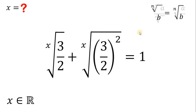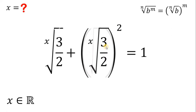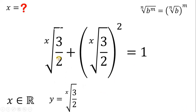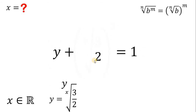Let's recall another identity: if we have the n root of b raised to m, it is equivalent to the n root of b raised to the power of m. Therefore, this x root of 3 over 2 quantity squared can be written as x root of (3 over 2) quantity squared. Now, take note that we have similar terms — x root of 3 over 2 — so we can replace this with another variable and call it y. Therefore, this expression is just y, and this expression is just y squared.